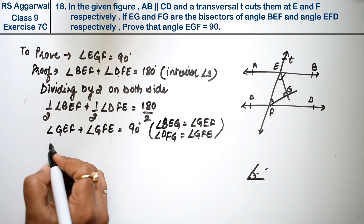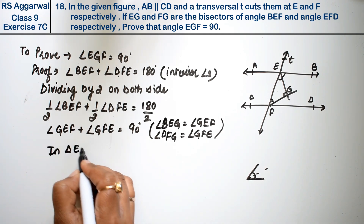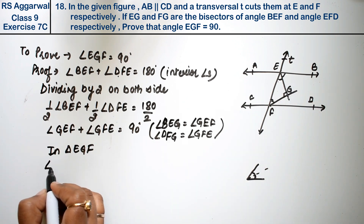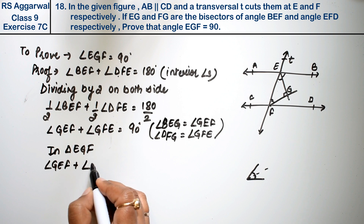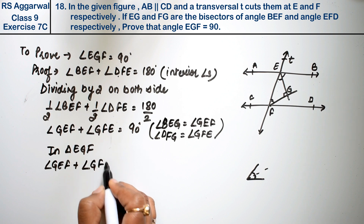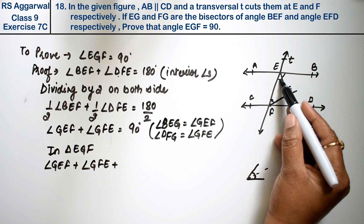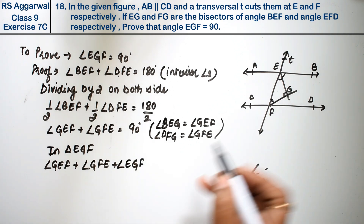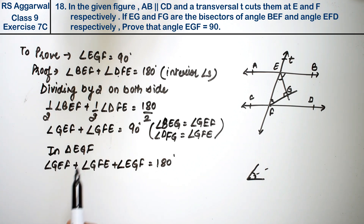Now, in triangle EGF, the sum of all three angles is 180 degrees. So angle GEF plus angle GFE plus angle EGF equals 180 degrees. We have already shown that angle GEF plus angle GFE equals 90 degrees.